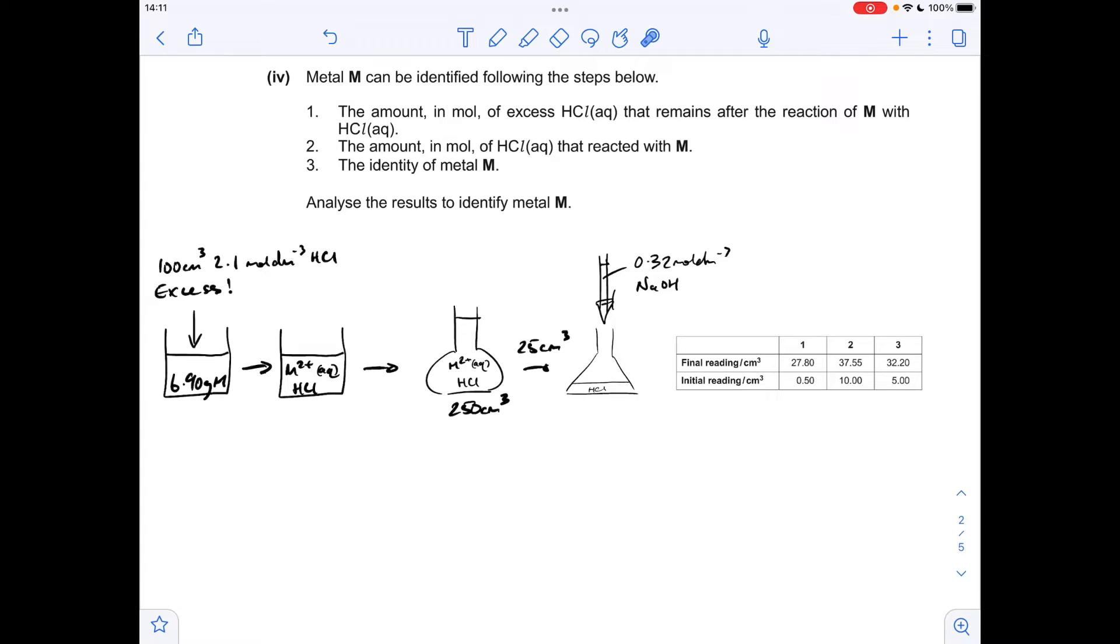They've taken 100 cm cubed of 2.1 mol per decimeter cubed HCl, which we're told is an excess of the acid, and they've put that in with 6.9 grams of metal M. The metal's been turned into its plus 2 oxidation state, so we've got aqueous M2+ ions in there, but we've also got some leftover HCl.